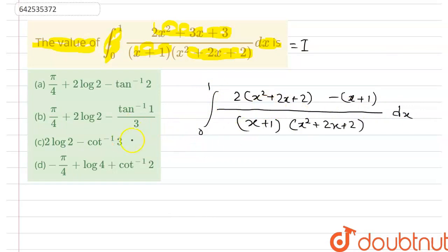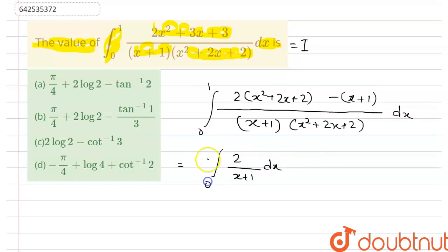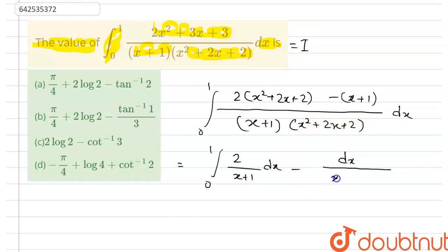We can separate these two out. The (x² + 2x + 2) will cancel, giving 2/(x + 1) dx from 0 to 1. Then (x + 1) cancels in the second term, leaving dx divided by (x² + 2x + 2). Note that x² + 2x + 2 can be written as (x² + 2x + 1) + 1, which is (x + 1)² + 1.